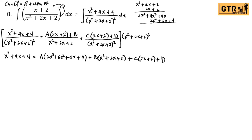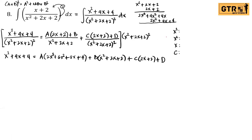Now we can equate the coefficients. The highest power is x³. Starting with the coefficient of x³: we have 2A on the right. There is no x³ on the left side, so 2A = 0, which means A = 0.